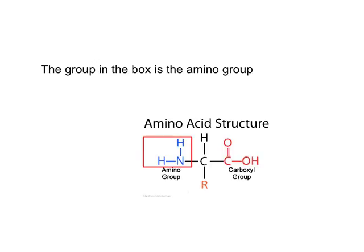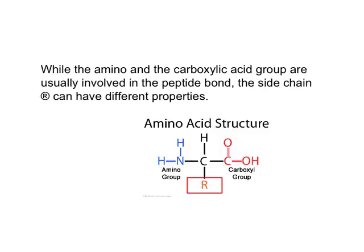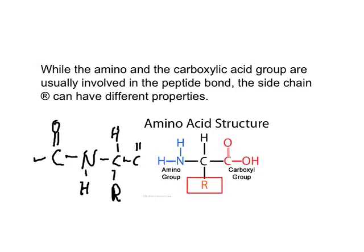The group in the box this time is an amino group. Both the amino group and carboxylic acid group are usually involved in the peptide bond, forming a repeating backbone. It is the side chain that can have different properties.